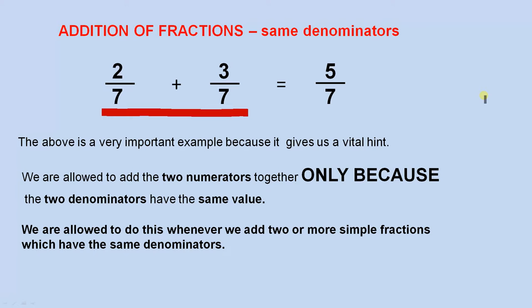We are allowed to add the two numerators together only because the two denominators have the same value. So you notice here the denominator is 7 and this denominator here is 7. We are allowed to do this whenever we add two or more simple fractions which have the same denominators.